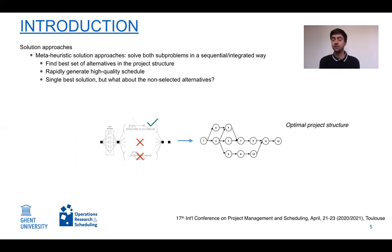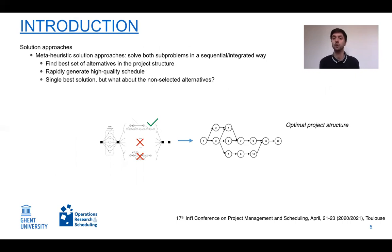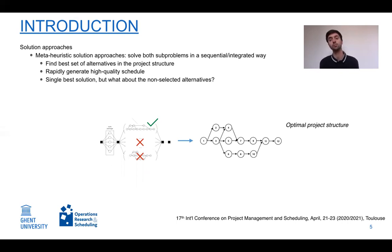In recent years, several researchers have investigated variants of this generic problem, each with their own features and terminology — calling it flexible project structures, alternative activity chains, or alternative production processes. Multiple solution approaches have been proposed, including different meta-heuristic approaches to solve the selection and scheduling subproblems sequentially or in an integrated way.